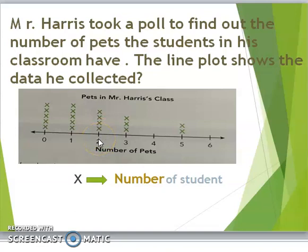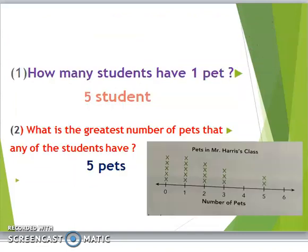With this information, can you tell me how many students have 1 pet? Look here, we stop at 1, so count the x's. 1, 2, 3, 4, 5. Excellent. So, we have 5 students.